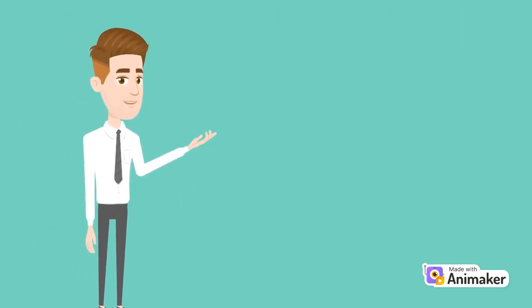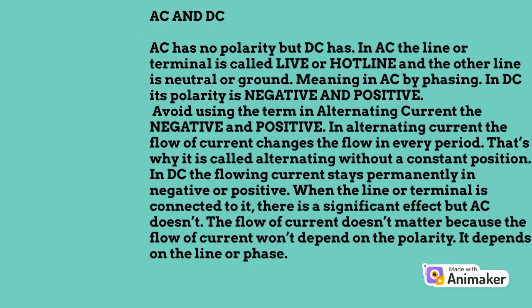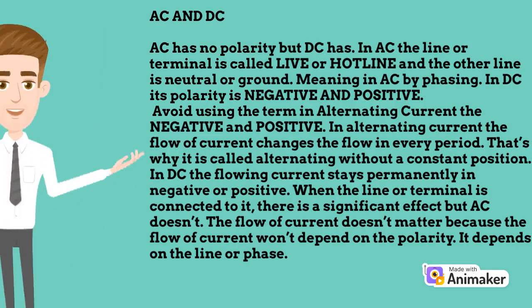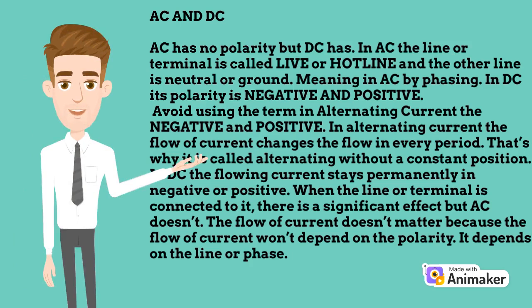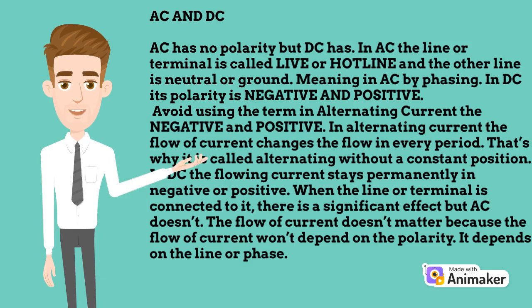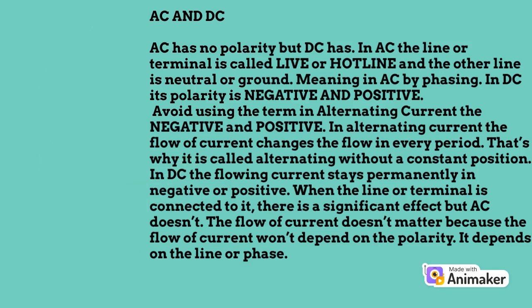Now let's get to the things we should always remember about these two currents. It is very basic, but don't forget: AC has no polarity, but DC has. In AC, the line or terminal is called the live or hot line, and the other line is neutral or ground — meaning in AC, we refer to phasing. In DC, the polarity is negative and positive. Avoid using the terms negative and positive in alternating current, because in AC the flow of current changes direction every period — that's why it is called alternating, without a constant position.